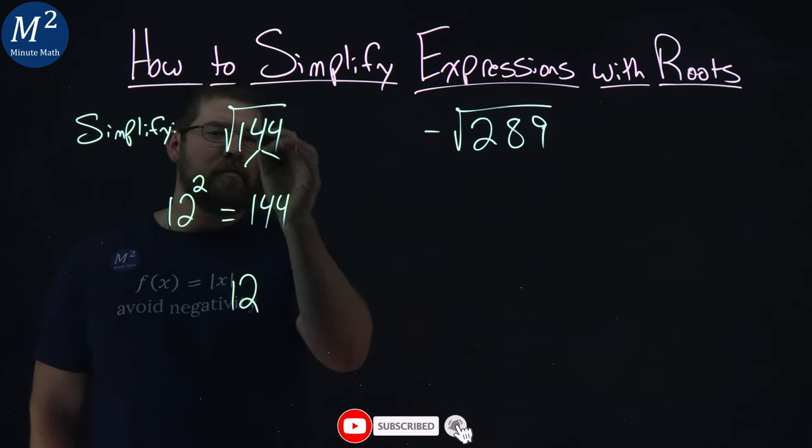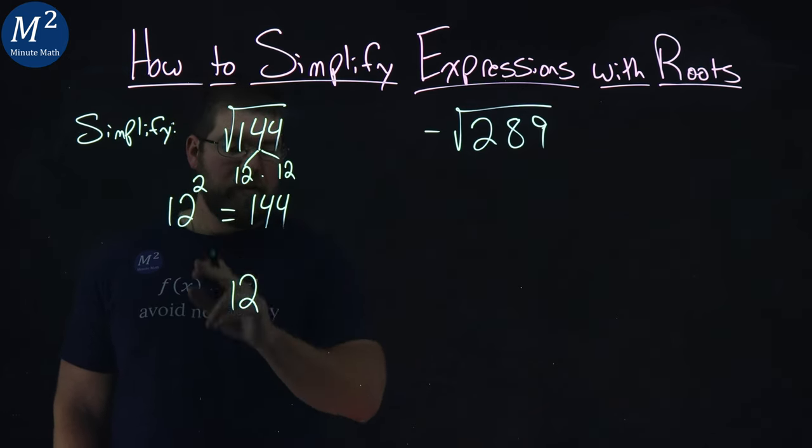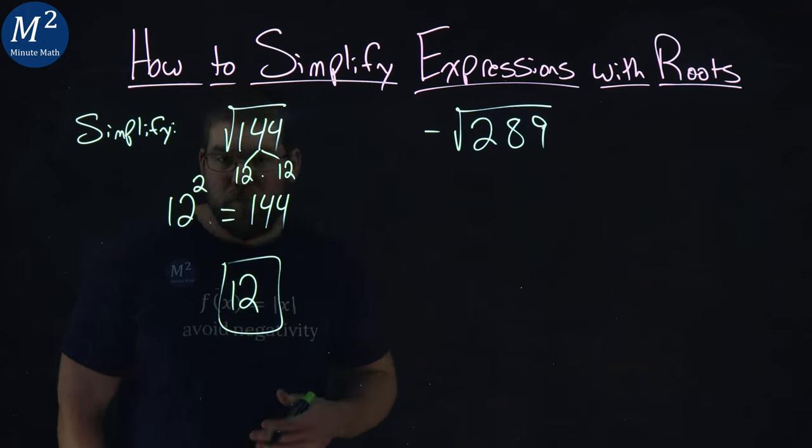We can also see it if you want to break it down like this: 144 is 12 times 12. We've got two 12s being multiplied. Either way, our answer is 12.